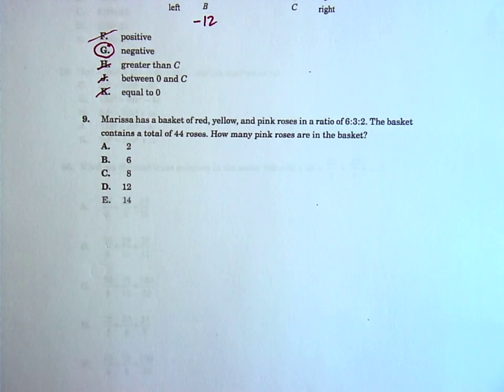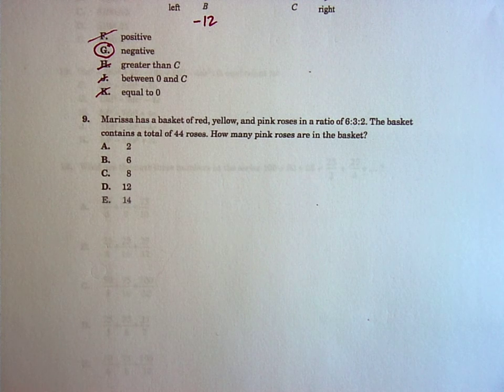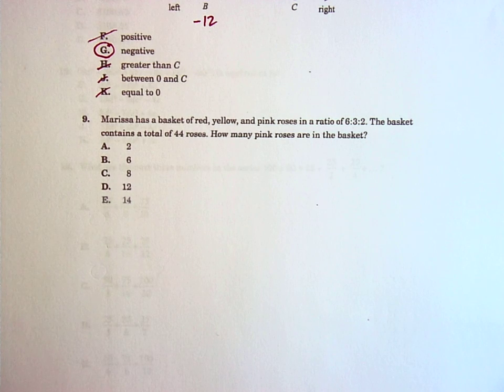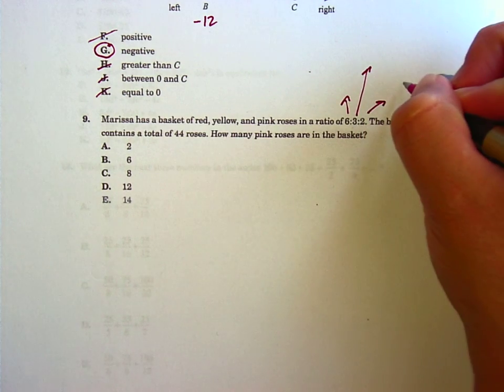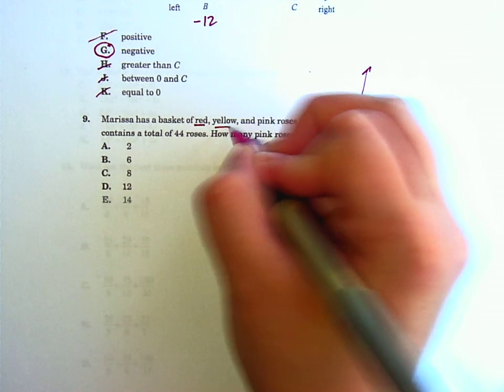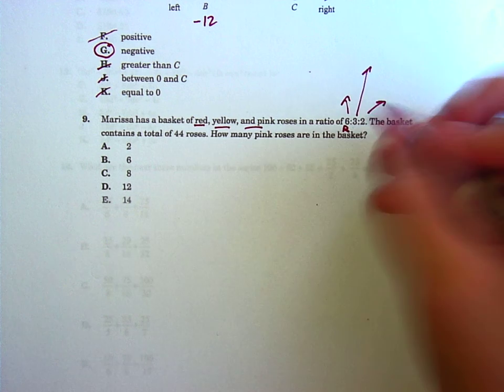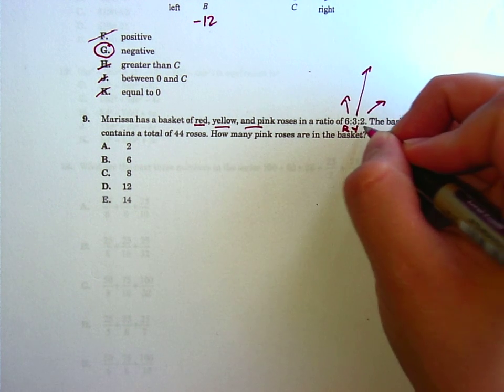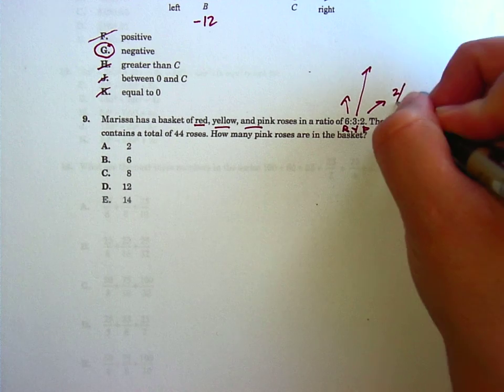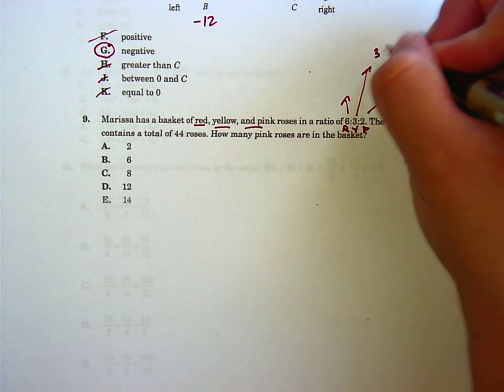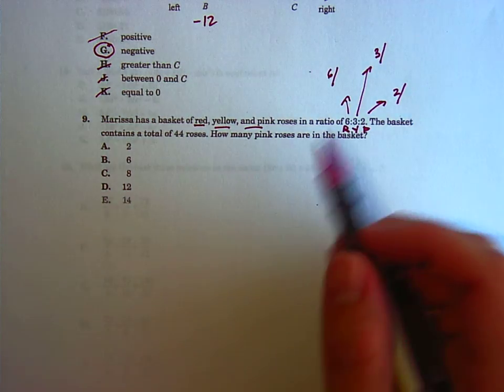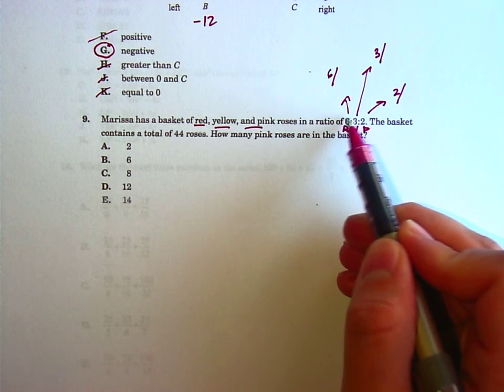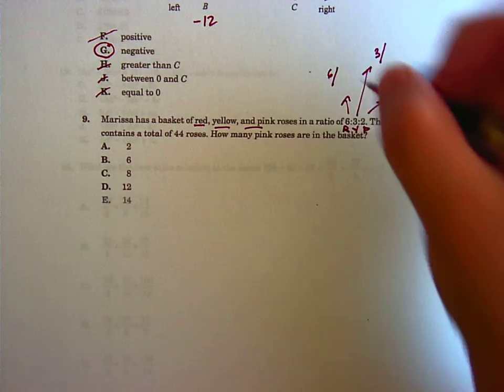Marissa has a basket of red, yellow, and pink roses in a ratio of 6, 3, and 2. The hard part about ratios that people forget is they forget how to figure out what the bottom number of the fraction is. The top number here, these represent these in order. So, the red number is 6, and the yellow number is 3, and the pink number is 2. Pink is 2 out of something, and yellow is 3 out of something, and red is 6 out of something. And the out of something is how many total you have in this little ratio set here. So, that's 6 plus 3 plus 5, that's 11.